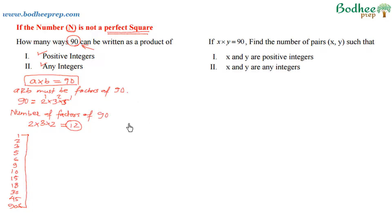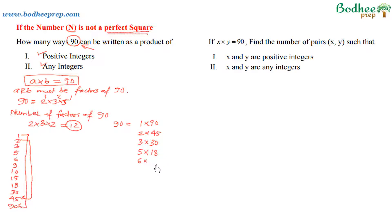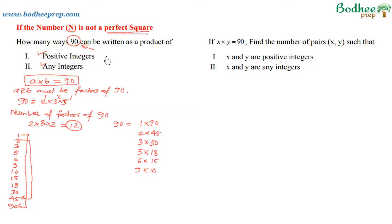Let me write all the factor pairs. 90 can be written as: 1 × 90, 2 × 45, 3 × 30, 5 × 18, 6 × 15 (note: 6 pairs with 15), and 9 × 10. As you can observe, we can write 90 as a product of two natural numbers in these 6 ways, and every term in each pair is a factor of 90.